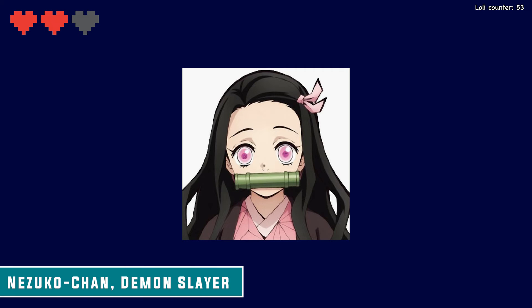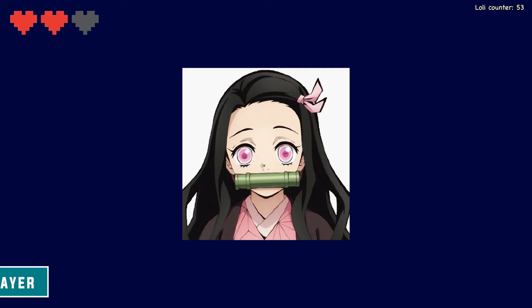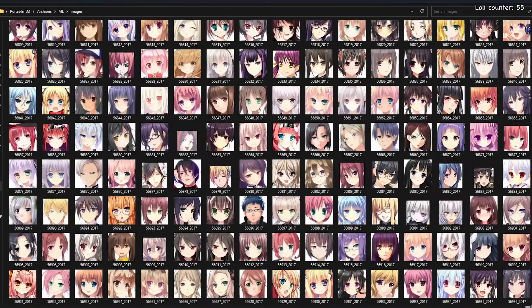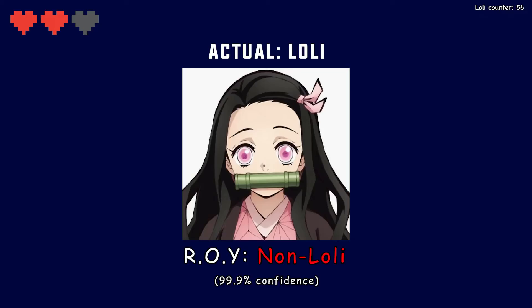Our 10th character is Kamado Nezuko, who I believe is 12, and so I've decided to classify her as a lolly. Even though she doesn't really fit that stereotype, I think visually she's pretty close. Roy says not a lolly with 99.9% confidence. I think this primarily comes from the fact that she has no mouth — in all of Roy's travels, he's likely never come across a lolly with no mouth. When he sees Nezuko with a bamboo stick where her mouth should be, he concludes she can't be a lolly. But Roy, you gotta be better than that — so I'm taking another life off, leaving you with just one remaining.